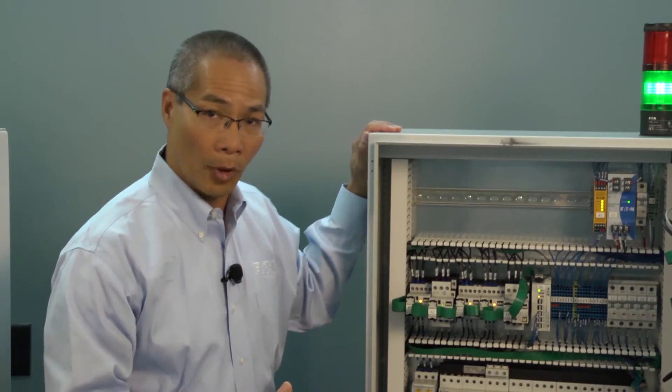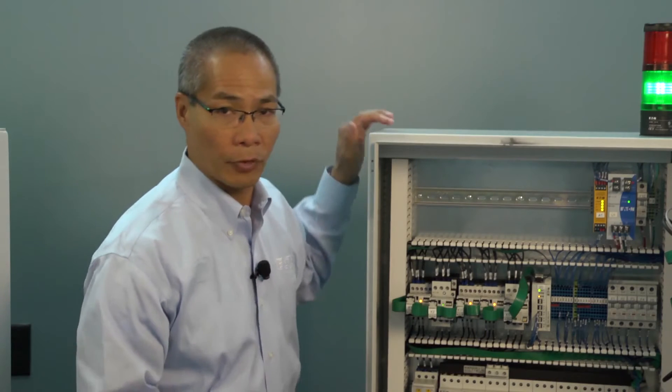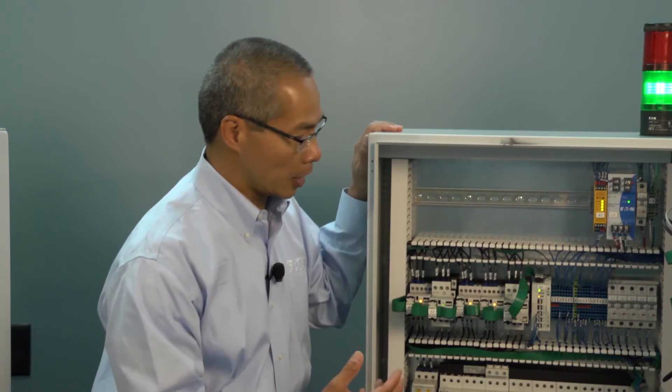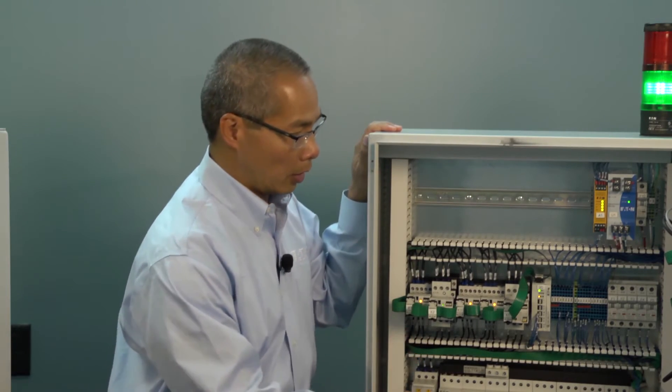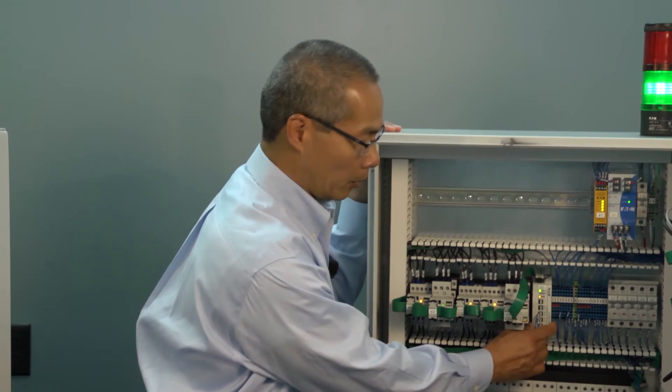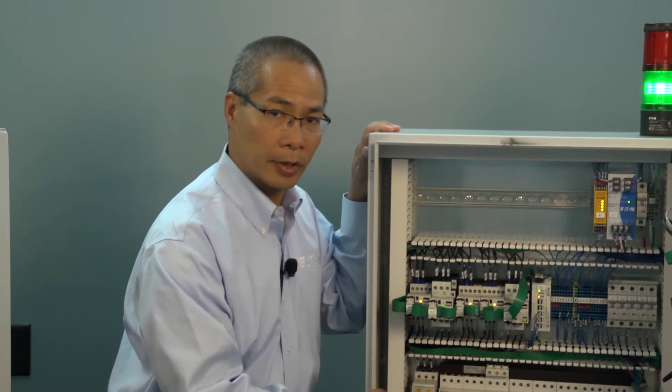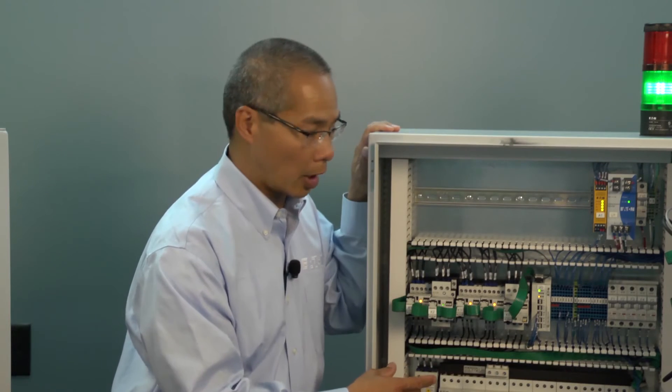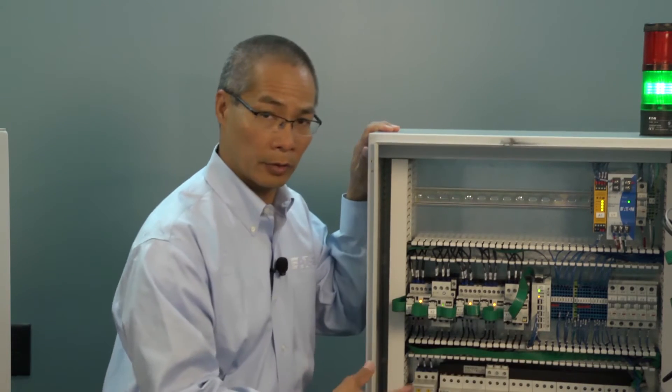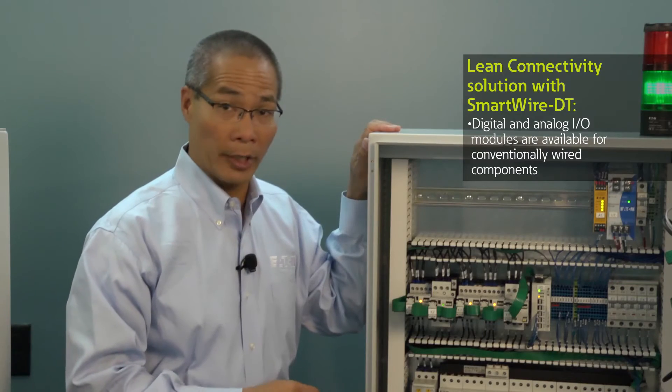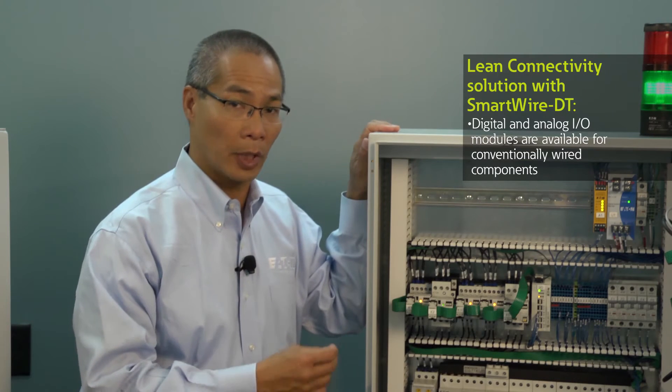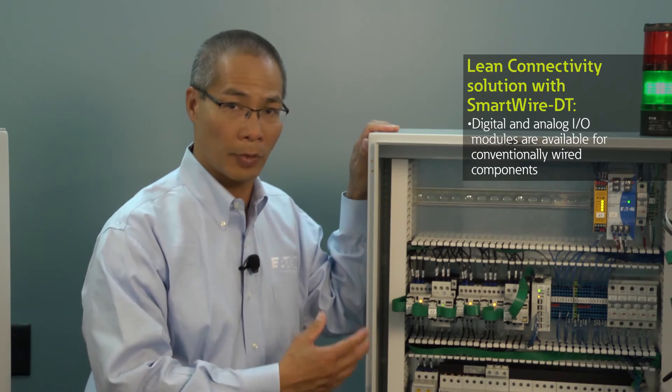For other components such as the StackLite, for example, that does not have a SmartWire DT module, you can use one of eight different I/O module cards on SmartWire DT to connect to different devices. We have a variety of digital and analog I/O modules to allow you to connect just about anything to SmartWire DT as well.